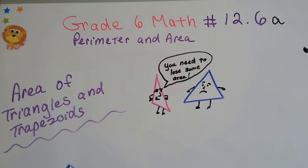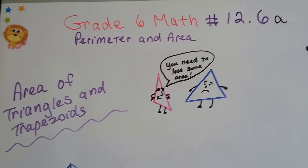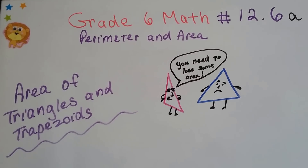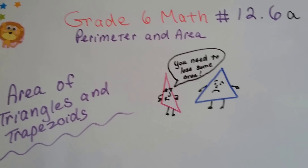Grade 6 math number 12.6a: area of triangles and trapezoids.